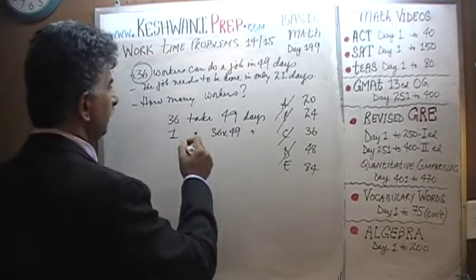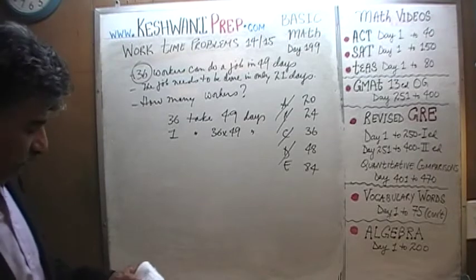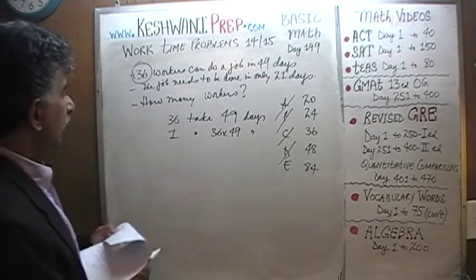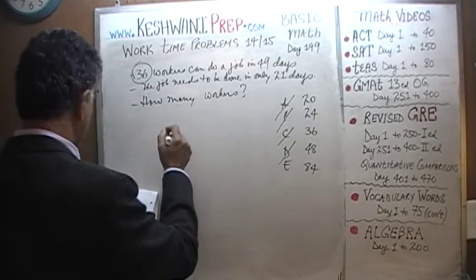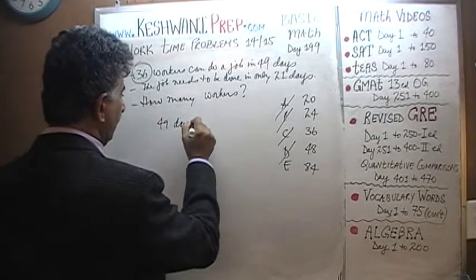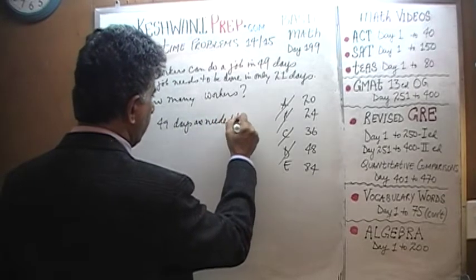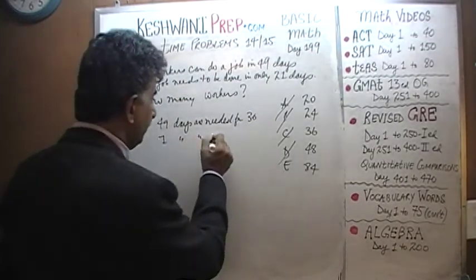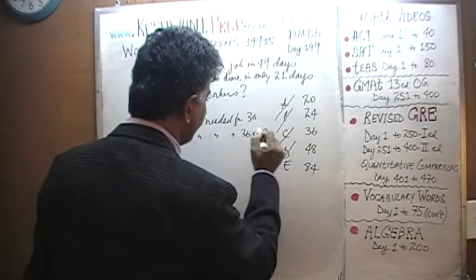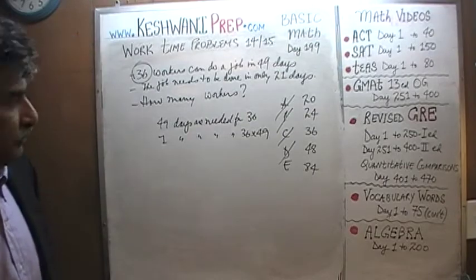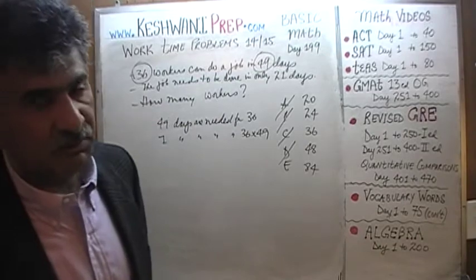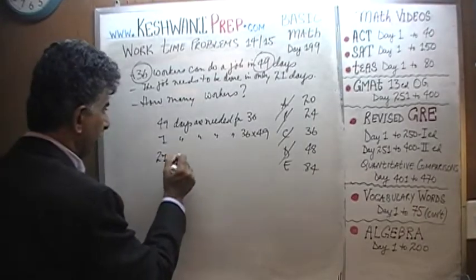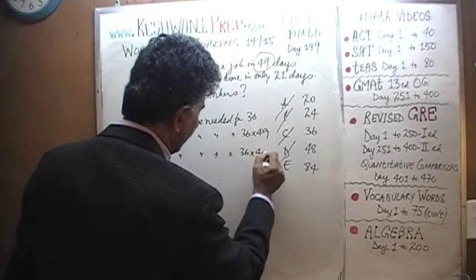Actually, let's restart — it's the days we are interested in, not the number of workers yet. 49 days are needed for 36 workers. If you want to finish the job in one day, you're going to need 36 times 49 workers. It usually takes 49 days, so if you want the entire job done in one day, you need 49 times as many workers. But we don't have to finish in one day — we have 21 days. So 21 days should require 36 times 49 over 21 workers.